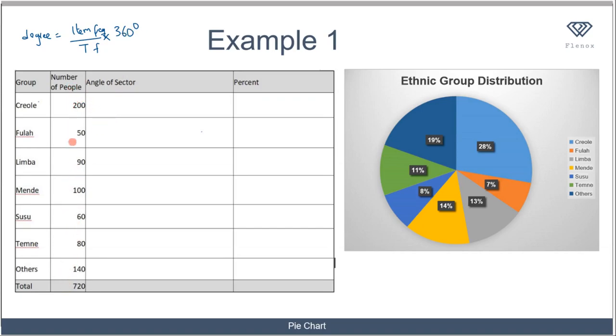The angle for Krioli is 200 over 720 times 360, which gives us 100 degrees. We can apply that to the rest: 50 over 720 times 360 gives us 25 degrees.